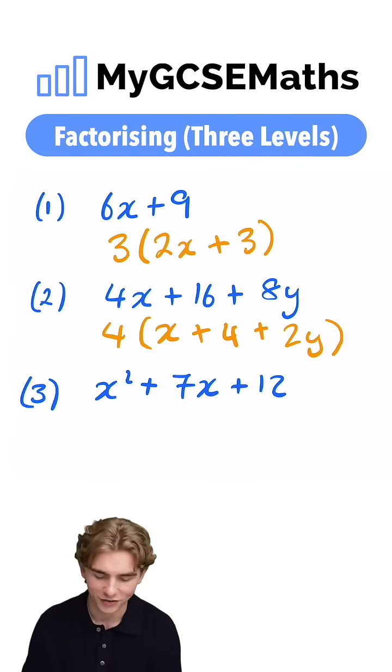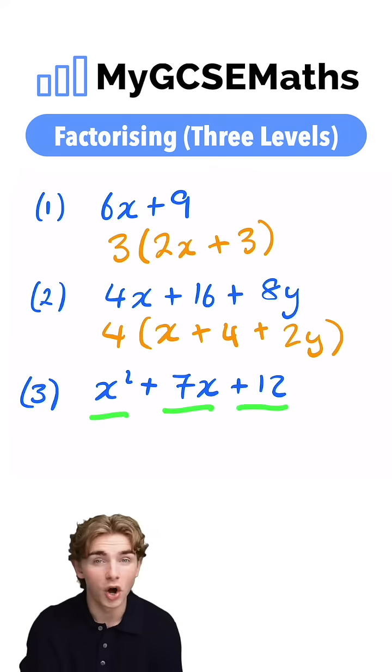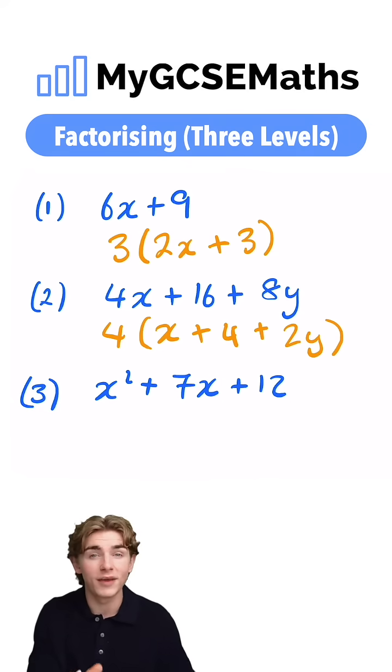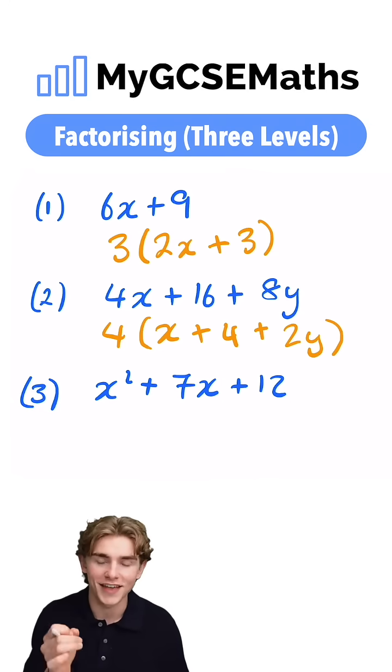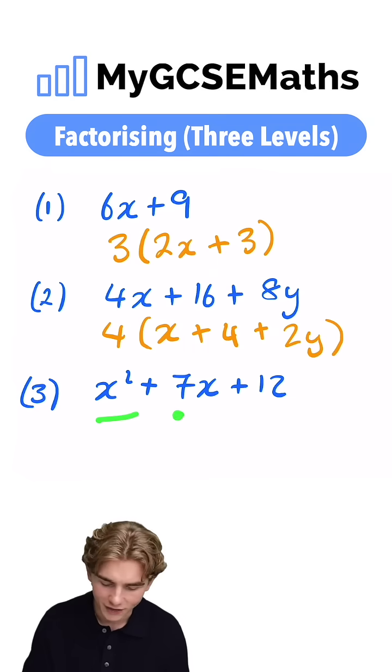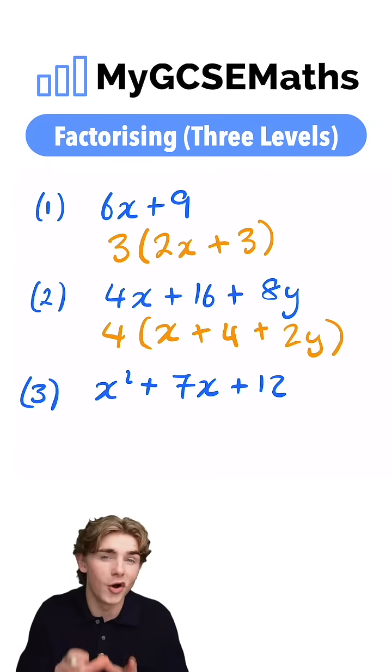Finally, we want to factorize this time x squared plus 7x plus 12. Hold up. This one's a little bit different. Why? Because here we have a quadratic expression. We have an x squared term, a term in x, and then a regular number on the end. So we're going to need to write this as a pair of double brackets.